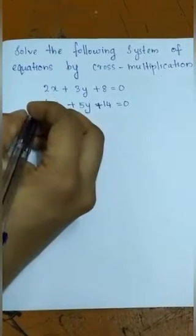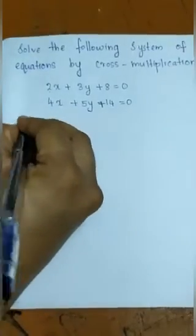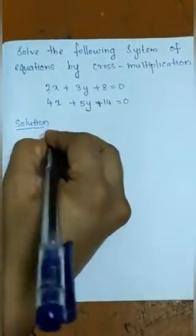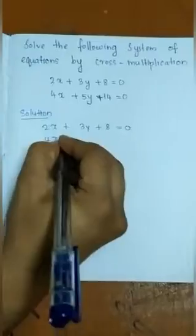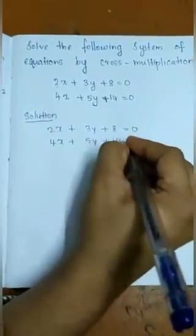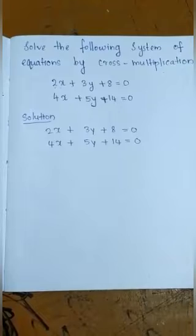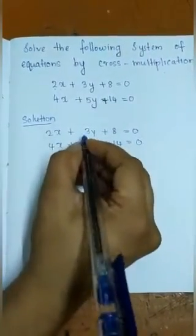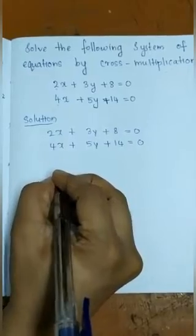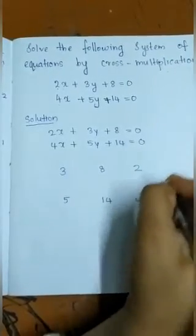The pair of linear equations given is: 2x + 3y + 8 = 0 and 4x + 5y + 14 = 0. When writing the answer, rewrite the given equations first. Then write the coefficient of y: that is 3 and 5. Next, the constant terms: 8 and 14. Then the coefficient of x: 2 and 4. And again end with the coefficient of y: 3 and 5.